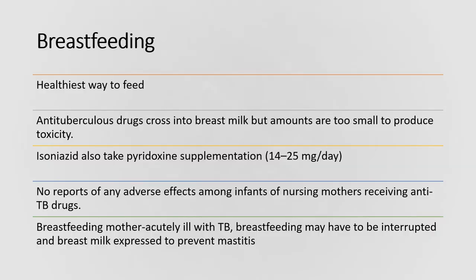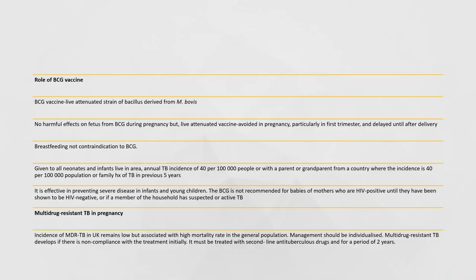Breastfeeding is the healthiest way to feed a baby. Antituberculous drugs cross into breast milk, but the amounts are too small to cause toxicity. With isoniazid, pyridoxine supplementation should also be taken. There are no reports of adverse effects among infants of nursing mothers receiving anti-TB drugs. Breastfeeding mothers who are acutely ill with TB may have to interrupt breastfeeding, and breast milk may need to be expressed to prevent mastitis. BCG vaccine uses a live attenuated strain derived from Mycobacterium bovis. No harmful effects on the fetus from BCG during pregnancy have been reported, but live attenuated vaccines are avoided in pregnancy, particularly in the first trimester, and delayed until after delivery.